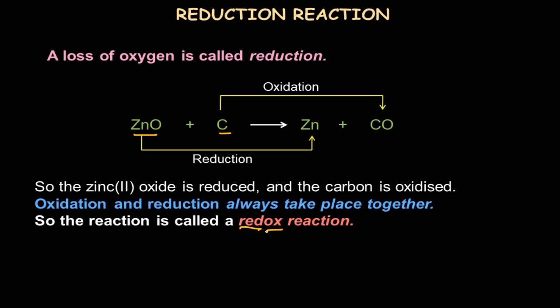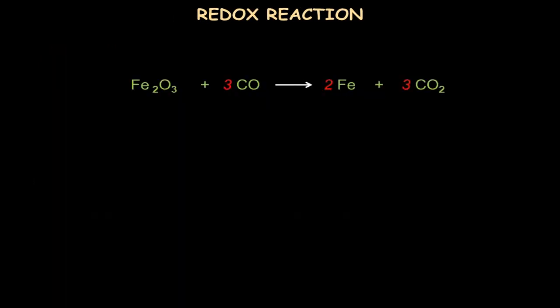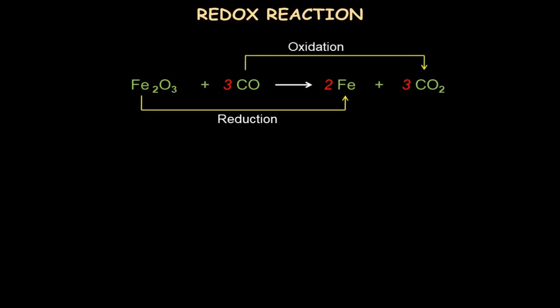Let's look at one more redox example: iron(III) oxide reacting with carbon monoxide to form iron and carbon dioxide. This is one of the most common reactions in the extraction of iron from its ore, hematite, which is mainly composed of iron(III) oxide. Here iron oxide is reduced to iron (oxygen lost), and carbon monoxide is oxidized to carbon dioxide (oxygen gained) — both reduction and oxidation occur together, making it a redox reaction.